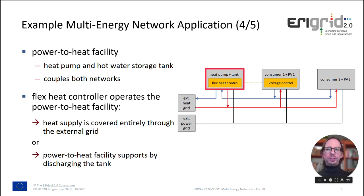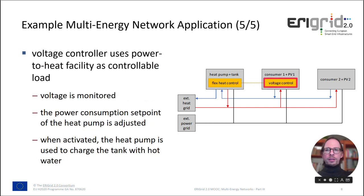To operate this facility, we use the so-called flex-heat controller. This controller determines whether the heat supply is covered entirely through the external grid, or if the power-to-heat facility supports by discharging the tank. In addition, there is a voltage controller that uses the power-to-heat facility as a controllable load. It monitors the voltage at consumer 1 and adjusts the power consumption setpoint for the heat pump. Whenever the heat pump is activated, it is used to charge the tank with hot water.